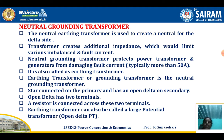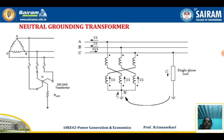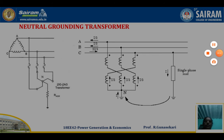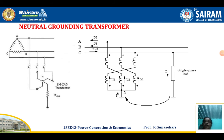The neutral grounding transformer — we already studied the earthing transformer, meaning the neutral of the earthing transformer is connected to the ground. It is star connected on the primary and has an open delta on the secondary. The open delta has two terminals, and a resistor is connected across these two terminals. Therefore this earthing transformer can also be called a large potential transformer, that is an open delta potential transformer.